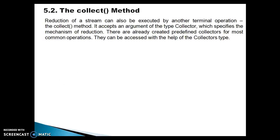Hello friends, Kishan here again. Welcome to this video tutorial. In the previous video tutorial we saw a stream reduction method called reduce — we saw the three flavors of reduce method and how it works through an example. In this video tutorial we are going to look into another reduction method called collect. The collect method accepts an argument of type Collector, which specifies the mechanism of reduction. There are already predefined collectors for most common operations, accessible via the Collectors utility class added in JDK 1.8, which provides a lot of factory methods.